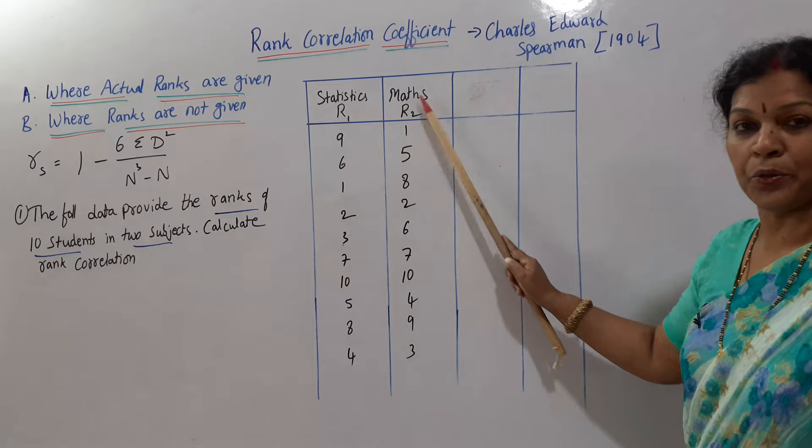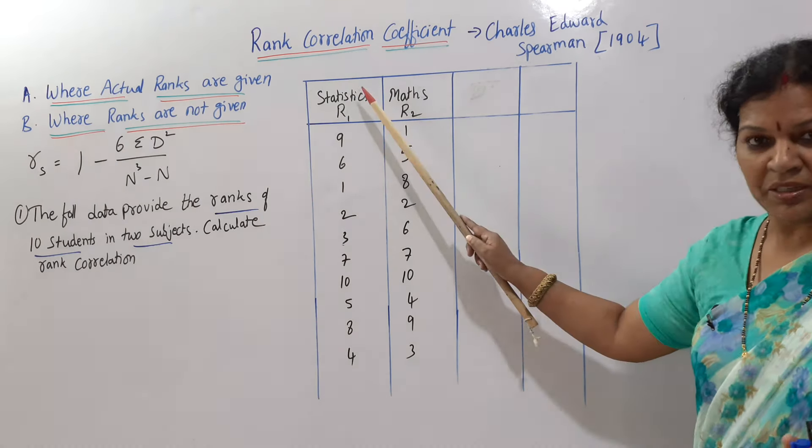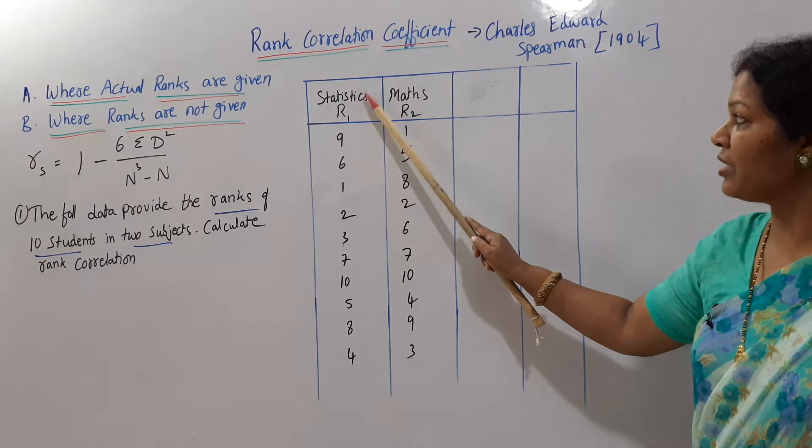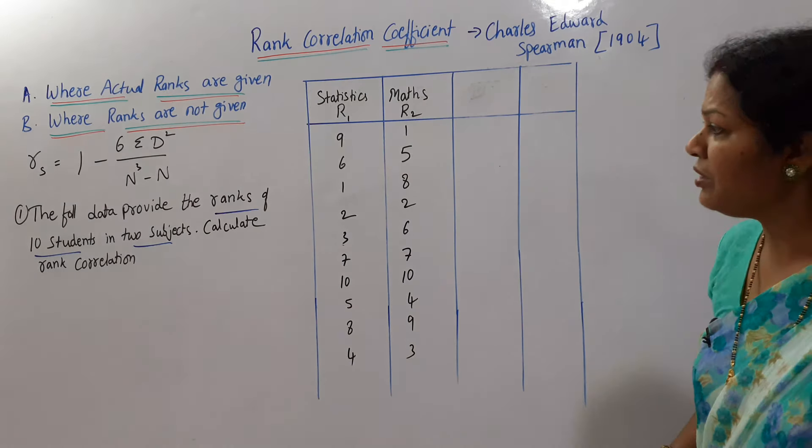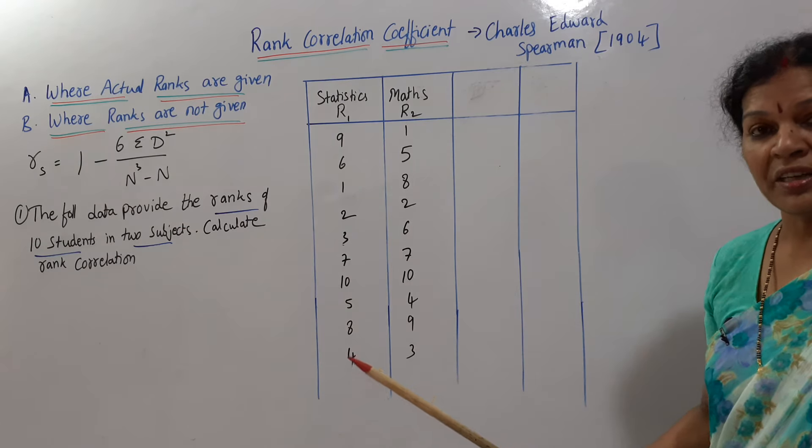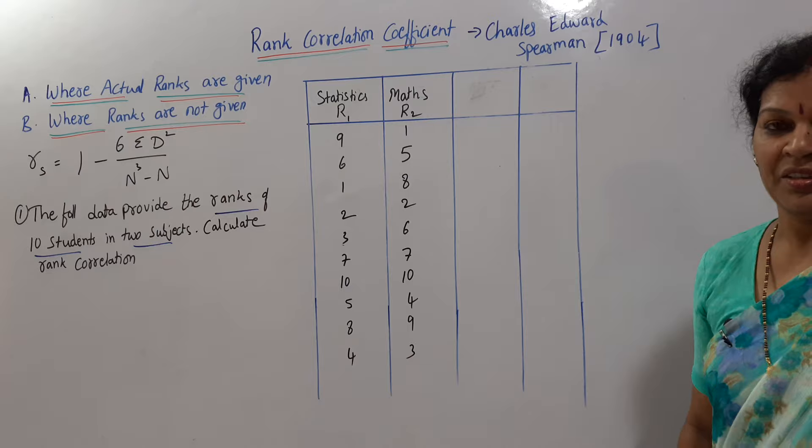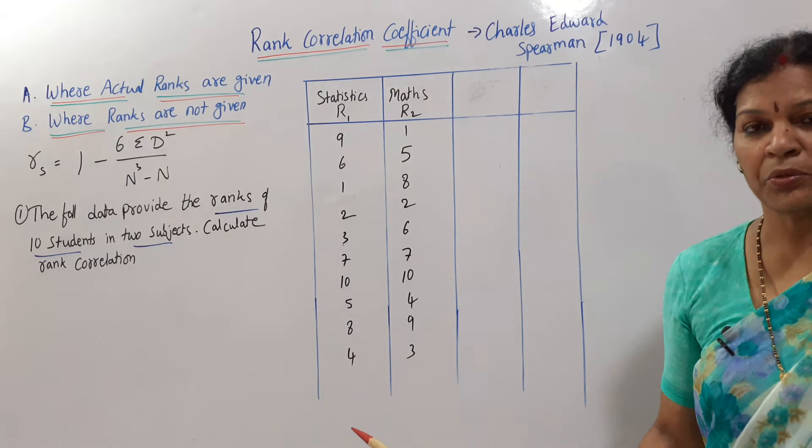What is the given data? Statistics and maths, two subjects ranks are given. I have written R1, R2—rank one, rank two. This I have written, but they did not give. They gave only statistics and maths subjects ranks of 10. How many students? Ten students. Statistics and maths ranks are given. No need to calculate the ranks—ranks are already given. Just we have to go ahead.